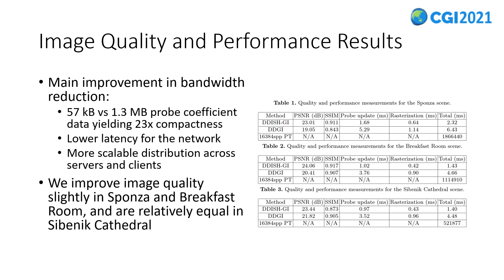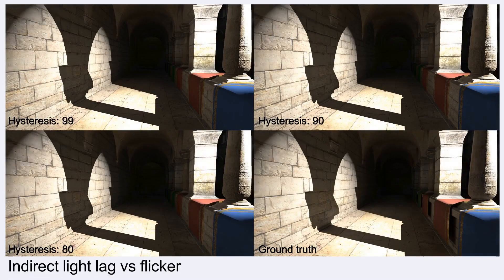23 times more compacted probe data means a lower bandwidth requirement, which lowers latency in network-sensitive situations and also scales better to distribution across servers and end-user clients. The runtime of the proposed method is also noticeably better, but it may be explained by different platforms — our Vulkan implementation versus the NVIDIA OptiX in DDGI and the non-optimized implementation of DDGI in the G3D rendering engine.